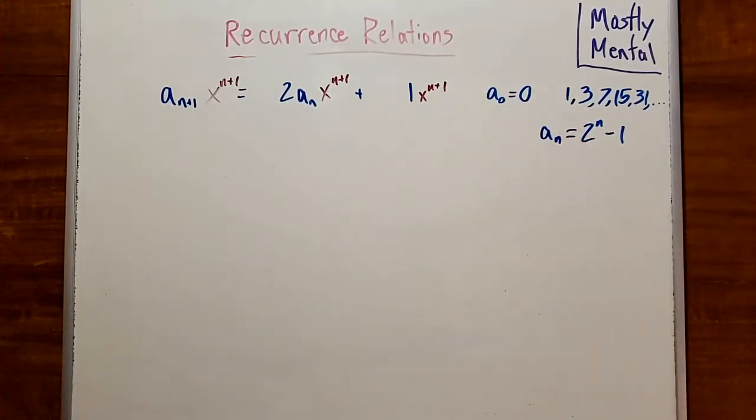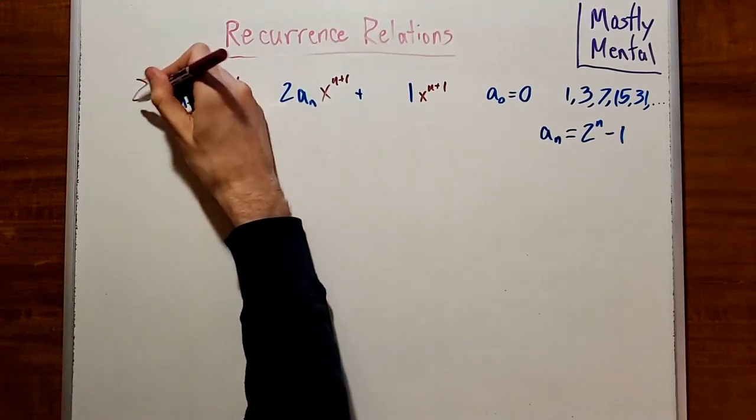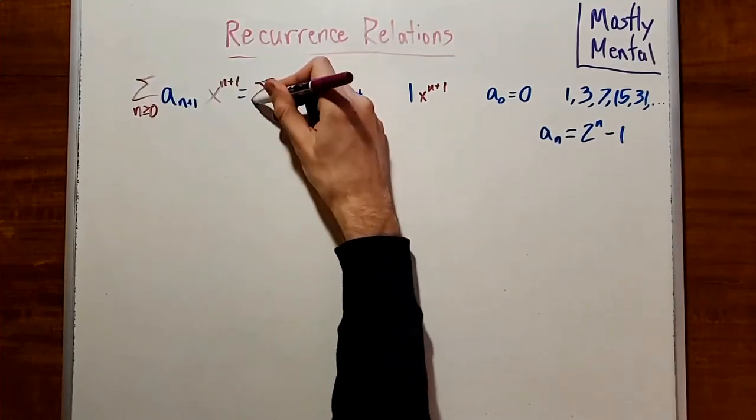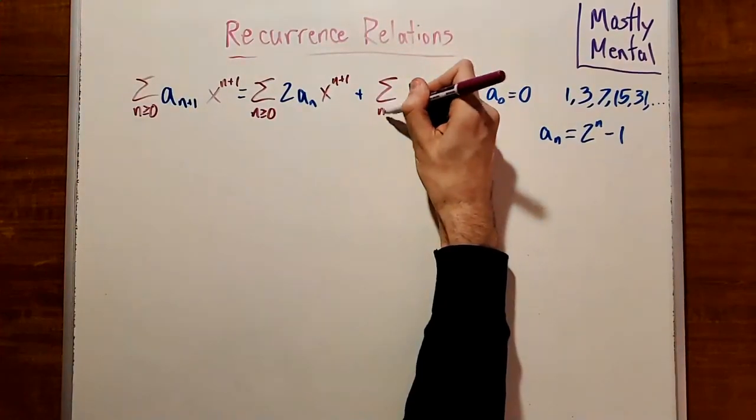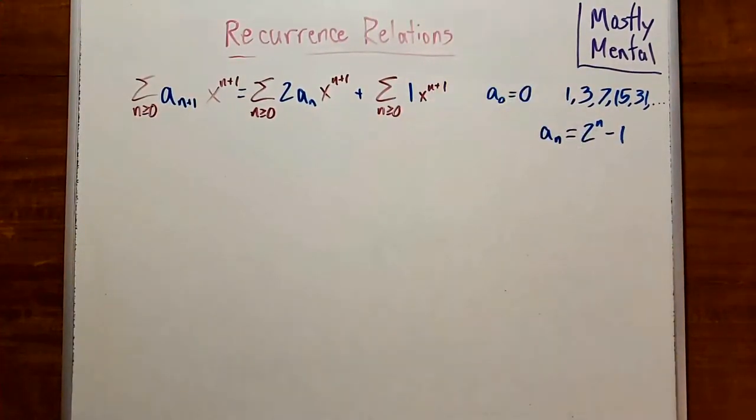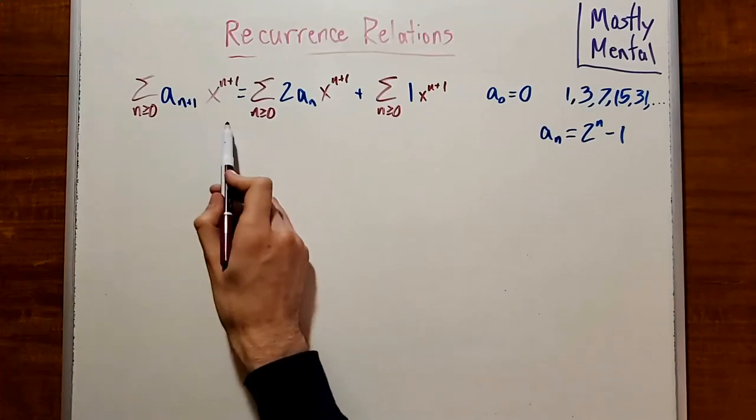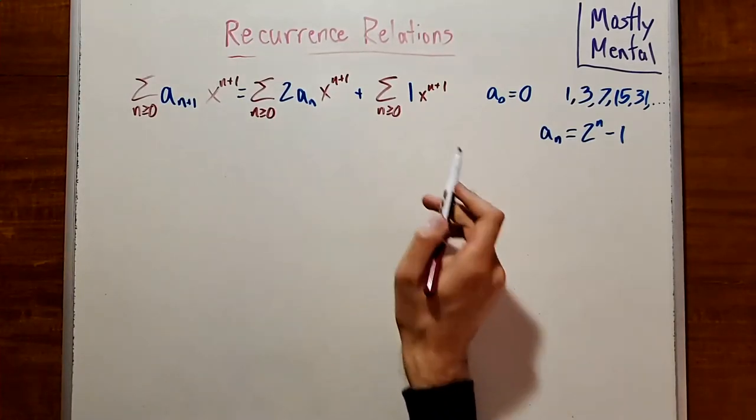Next, we're going to take the sum over all possible values of n. In this case, that means all n greater than or equal to 0. And finally, we're going to express each of these sums in terms of our generating function, A(x).